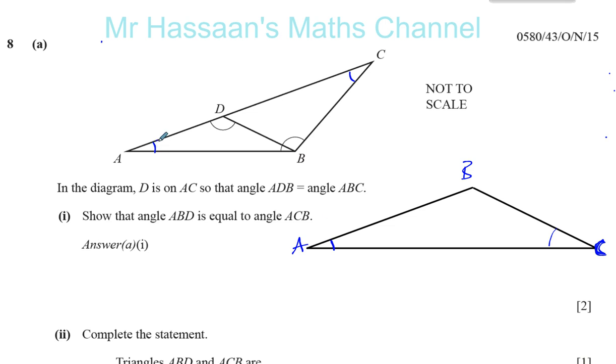So I know these two angles are definitely the same because they're common angles. And I know that this angle ABC is the same as angle ADB. So ABC is the same as ADB. That's given to us in the question. The question told us that this angle is the same as that.